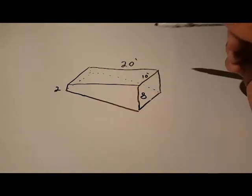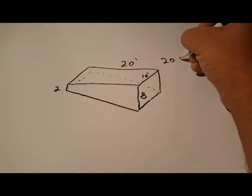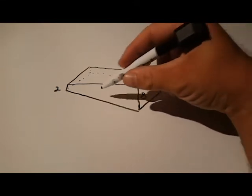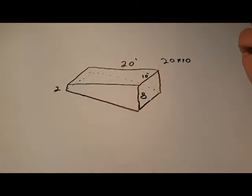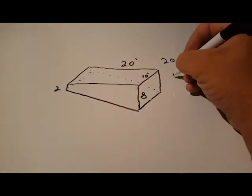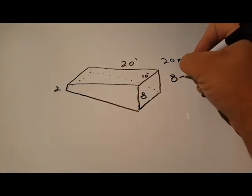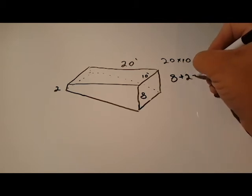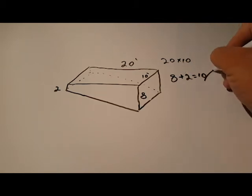These numbers are going to be the same, so we're still going to do 20 times 10, and then we're going to go, well, what is this number here? Well, the average depth, because this is a constant slope, is going to be your 8 plus your 2, which is equal to 10, and then you're going to divide that by 2. And that's going to get your average depth of 5 feet.